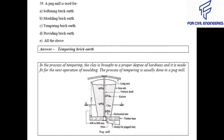If you see the figure of a pug mill, you can see that a pug mill has a long vertical shaft. Long arms and knives are attached to the vertical shaft. After filling the clay in the pug mill, when the long arm is rotated, the clay is tempered by the knives.